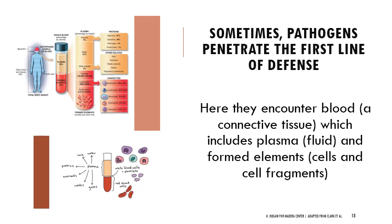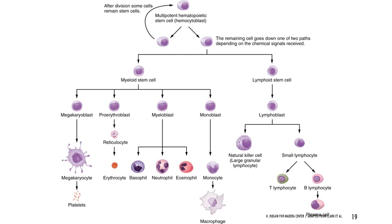Sometimes pathogens do get through the first line of defense, where they encounter blood — which has plasma, cells, and cell fragments. It's important to understand the different types of cells present and the signals released by pathogens that trigger our body's response. Hematopoietic stem cells in bone marrow are multipotent, meaning they can divide and become any type of blood cell specifically — not muscle, bone, or neurons, but any blood cell.